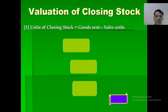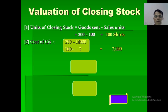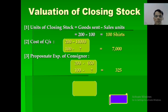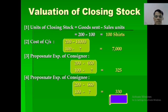Valuation of closing stock: units of closing stock equal number of goods sent minus units sold. Goods sent: 200 units; sales: 100 units; remaining stock: 100 units. Value of stock — 200 units cost 14,000, so 100 units cost 7,000 (original price of closing stock). Plus proportionate expenses of consignor: total units 200, expenses paid 650; for 100 units the proportionate amount is 325. Plus proportionate expenses of consignee: total units 200, expenses paid 660; for 100 units the proportionate amount is 330. Total value of closing stock: 7,655.